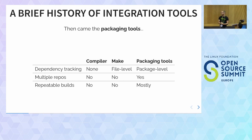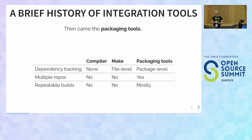The solution was packaging tools — things like dPackage and RPM. These solve some remaining issues: you can integrate multiple repos using packaging tools, and most distributions can do repeatable builds. But the dependency tracking is different — if you change one source file in your Linux kernel, the packaging tool rebuilds the whole kernel. In the end you still use Make for component work and packaging tools for integration.